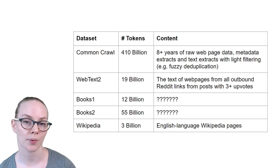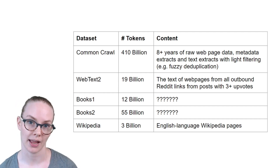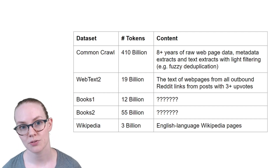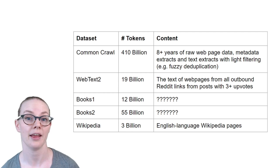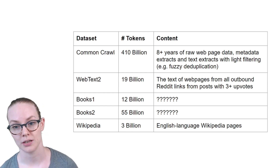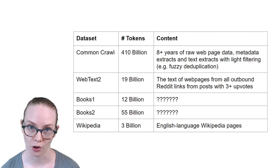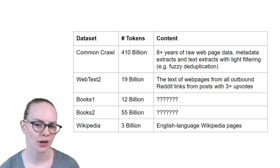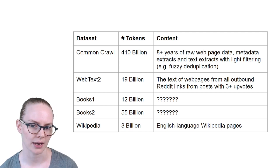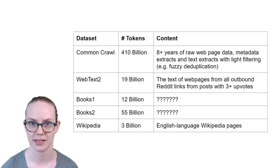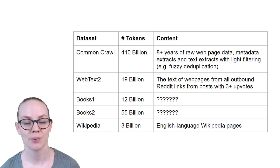In general, the more parameters a model has, the more data you need to train it. And GPT-3 was trained on a very large dataset. It included Common Crawl, WebText2 which was developed by the authors, two corpora called Books1 and Books2, and finally Wikipedia.